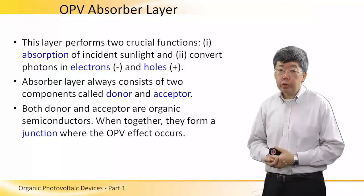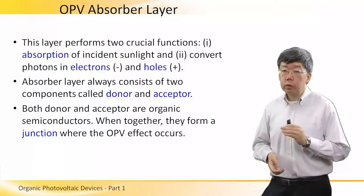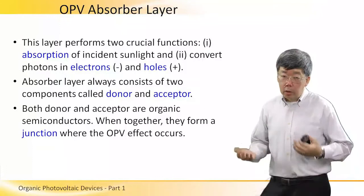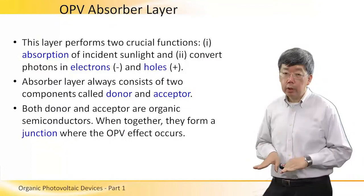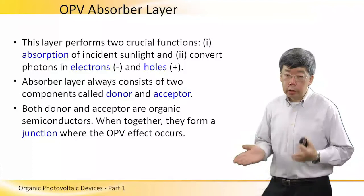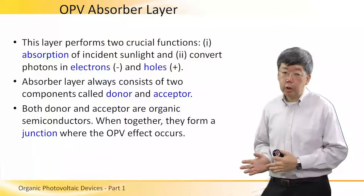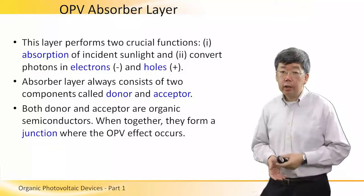Because the absorber layer has to conduct both electrons and holes, it will consist of two components called donors and acceptors. In the absorber layer of an OPV device, you will have both donor and acceptor in contact with one another. When this happens, they form what is called a heterojunction — the junction between the acceptor and the donor — and this is where the OPV effect occurs.